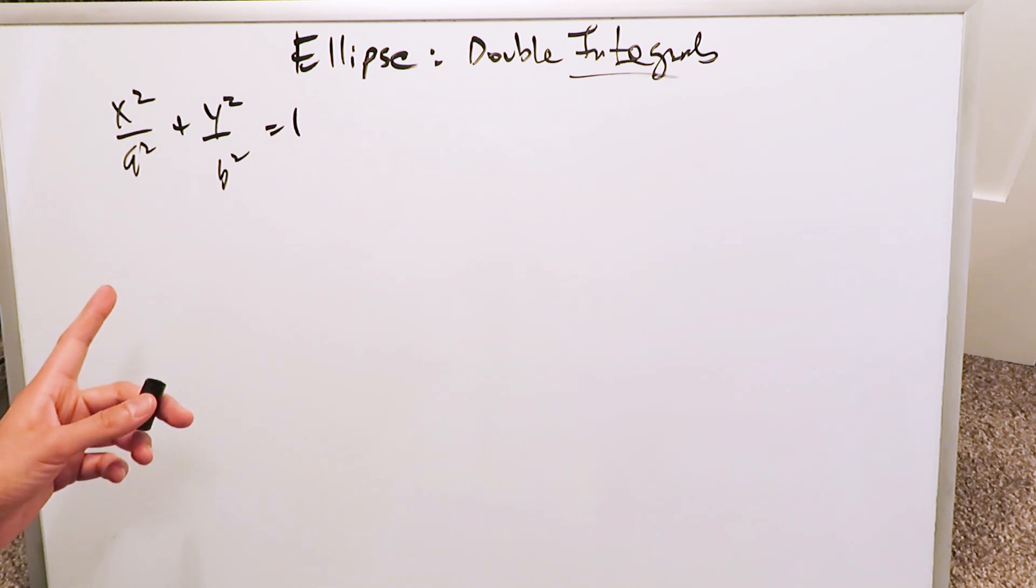x squared over a squared plus y squared over b squared equals 1. A horizontal oriented ellipse, standard orientation, origin at 0, 0.